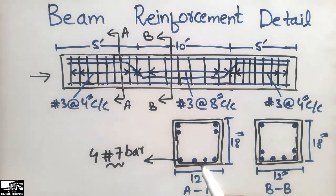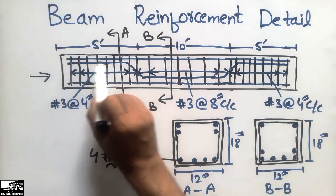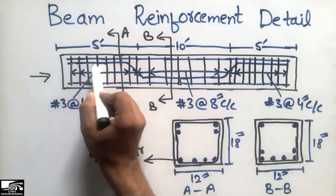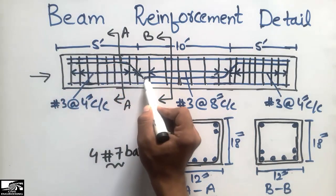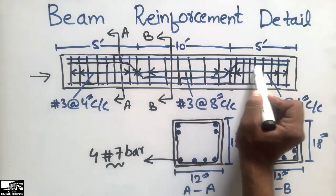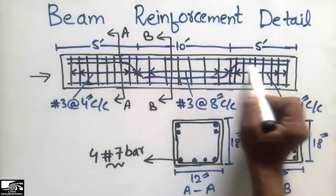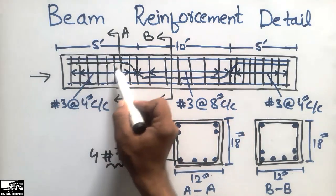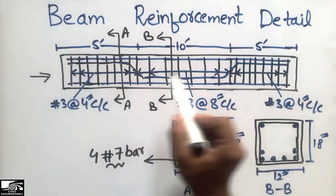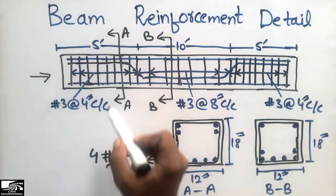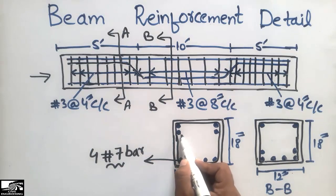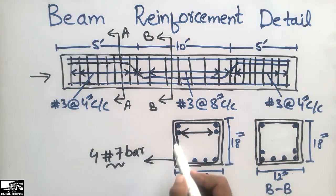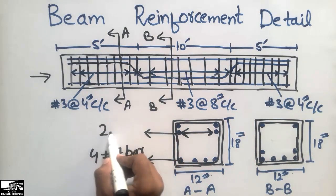Coming to the top portion, at the top of the beam you can see there is one crank bar placed here — a bar that moves straight, then bends down, then moves straight again, then bends upward. This is the crank bar, used to resist positive bending moment at the midpoint and negative bending moment at the supports. This crank bar is shown in Section AA, where there are two crank bars.